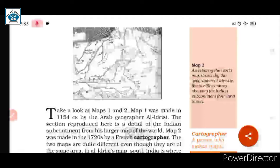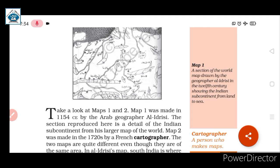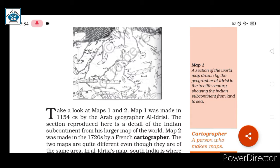Al Idrisi was an Arab geographer. The section reproduced here is a detail of the Indian subcontinent from his larger map of the world. This map shows the Indian subcontinent. Map 2 was made in the 1720s, while Map 1 was made in 1154 CE by Al Idrisi.